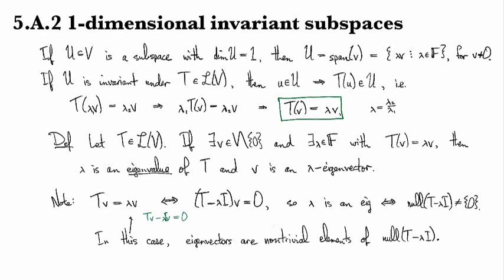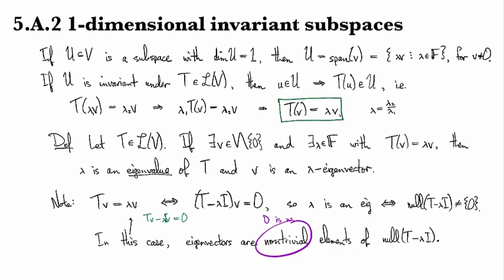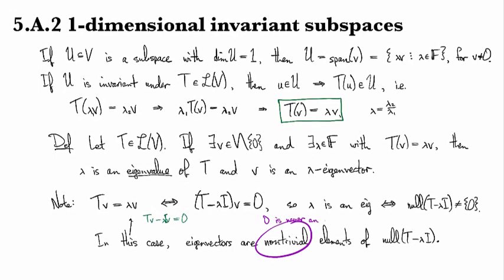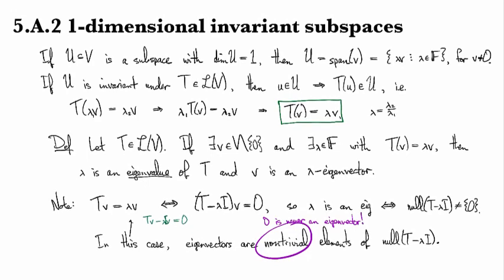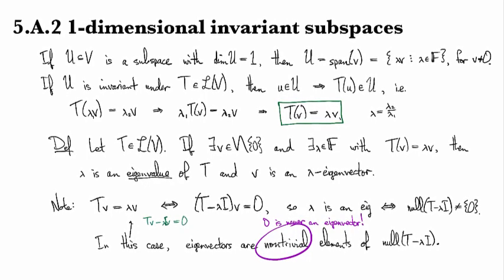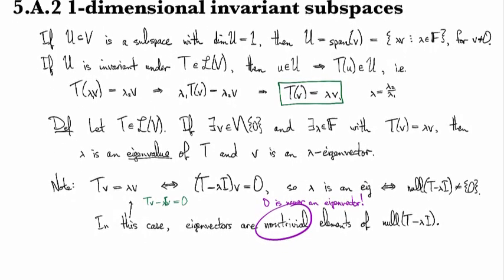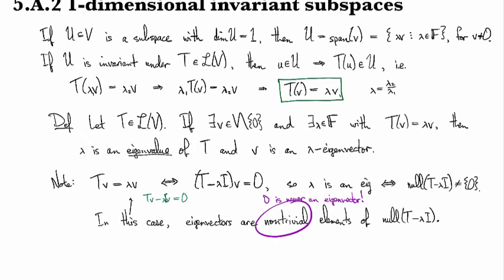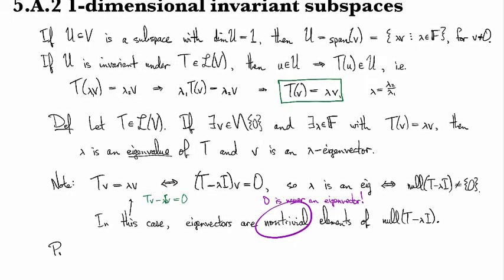Just to emphasize, 0 is never an eigenvector. The scalar 0 can be an eigenvalue—that's perfectly fine, happens all the time. But the 0 vector can never be an eigenvector. That defeats the definition and makes all sorts of things turn into nonsense.